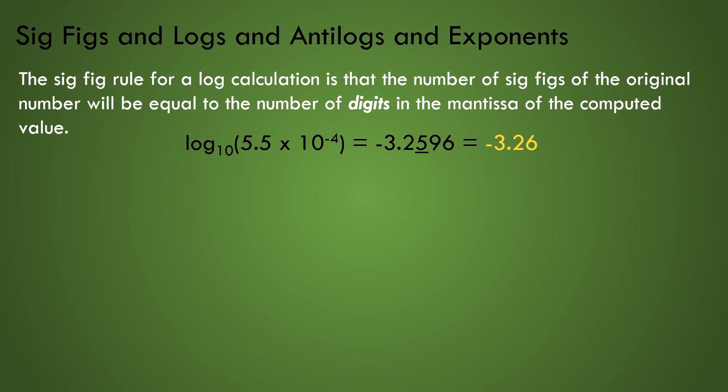So for our example, our final answer is minus 3.26, rounding off at the hundredths position. The original number, 5.5 times 10 to the power of minus 4, has two sig figs, so we must have two numbers in the mantissa, .26.